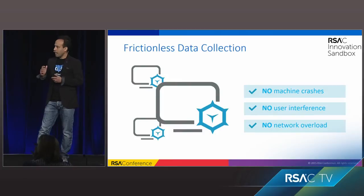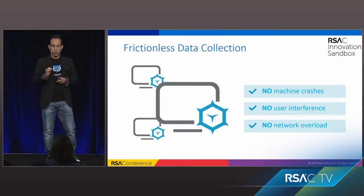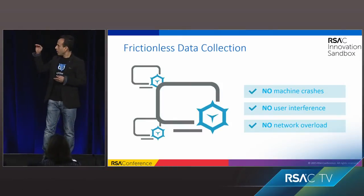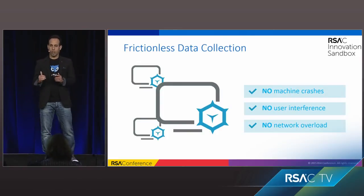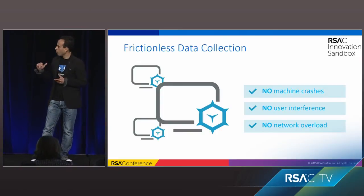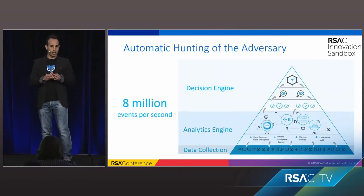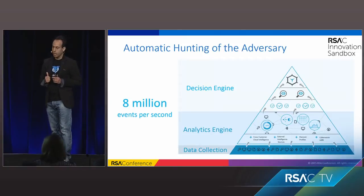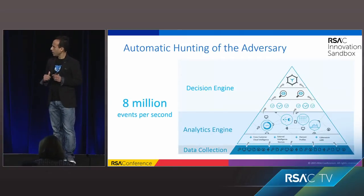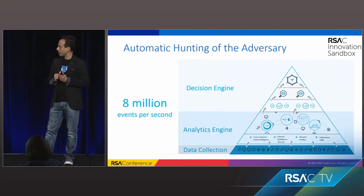I think the answer came down to three things. First, the way we collect information. We have a unique way to collect information without disrupting the user, the machine, or the network traffic. On top of that, we send the information to our main server, which can be on-premises or in the cloud — it's up to the customer to decide. We also enhance the information with a threat feed from outside the organization.